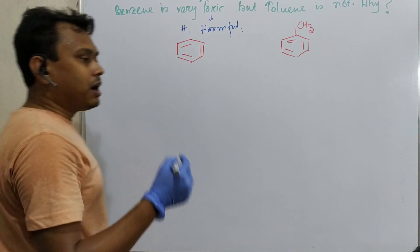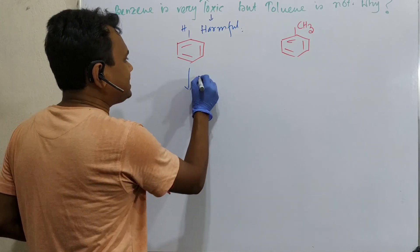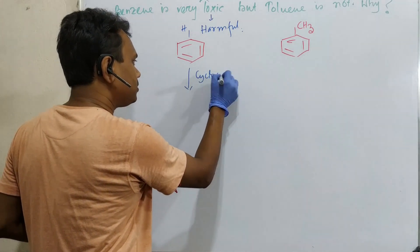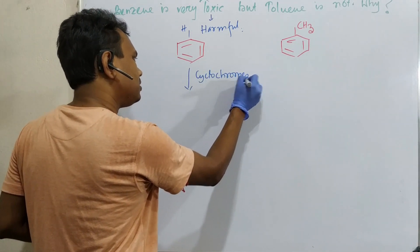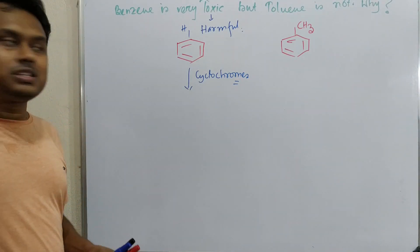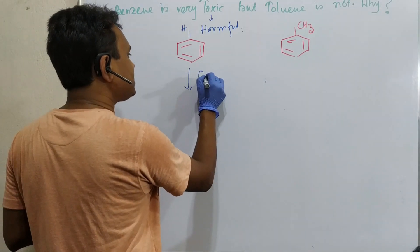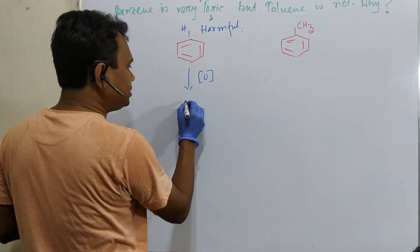In our body, there are enzymes named cytochromes which oxidize. The cytochromes are oxidizing enzymes and they ultimately produce benzene into corresponding epoxide derivative.